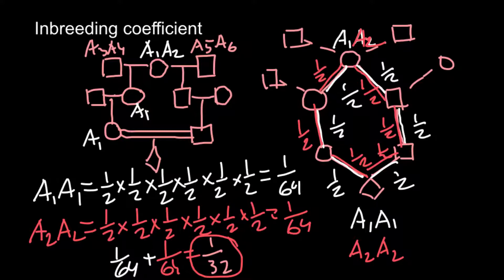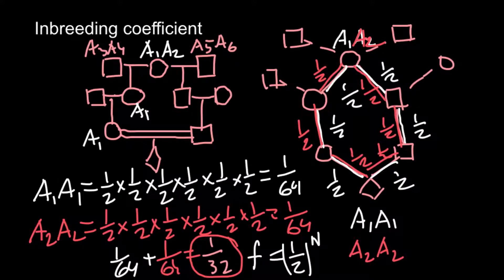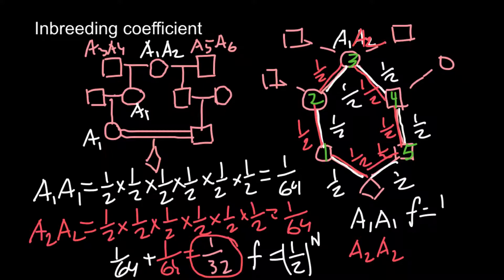But actually there is a formula that helps us do it much, much faster. The formula is: F (the inbreeding coefficient) equals one half raised to the power n, where n equals the number of nodes in the loop. Here the nodes are: number one, two, three, four, and five — we exclude the final individual from the count. So in this case F equals (1/2)^5, and the answer is 1 out of 32 — exactly what we got from our previous calculations, but in only a few seconds.